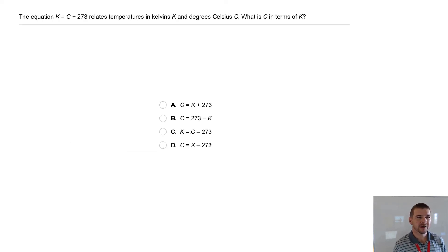Your turn. The equation K = C + 273 relates temperatures in Kelvins, capital K, and degrees Celsius, capital C. What is C in terms of K?